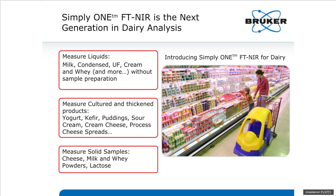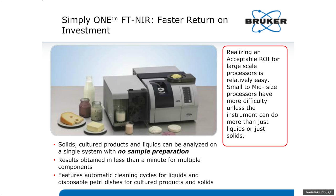Looking at the next generation in dairy analysis, the Simply One FTNIR by Bruker is composed of a liquid sampling module and Bruker's MPA spectrometer. It can measure liquids, cultured and thickened products, and solid samples all on one instrument, switchable under computer control. There's no need for an operator to change out modules or reconfigure the instrument when switching from liquid products to solids, cultured products, or cheeses. What you see on the right is the MPA spectrometer.